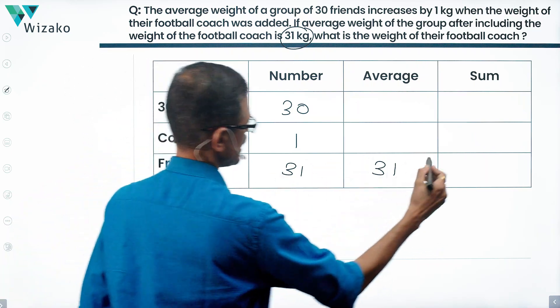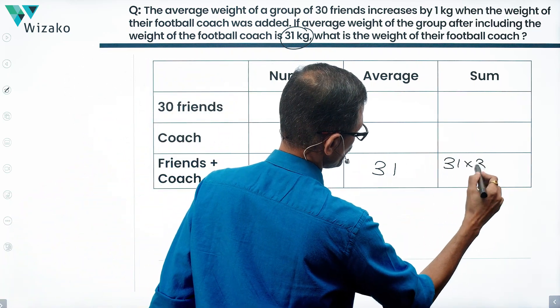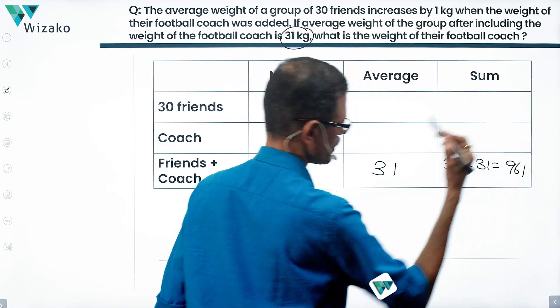That's 31 times 31, number times average. 31 times 31 is equal to 961, 31 square.